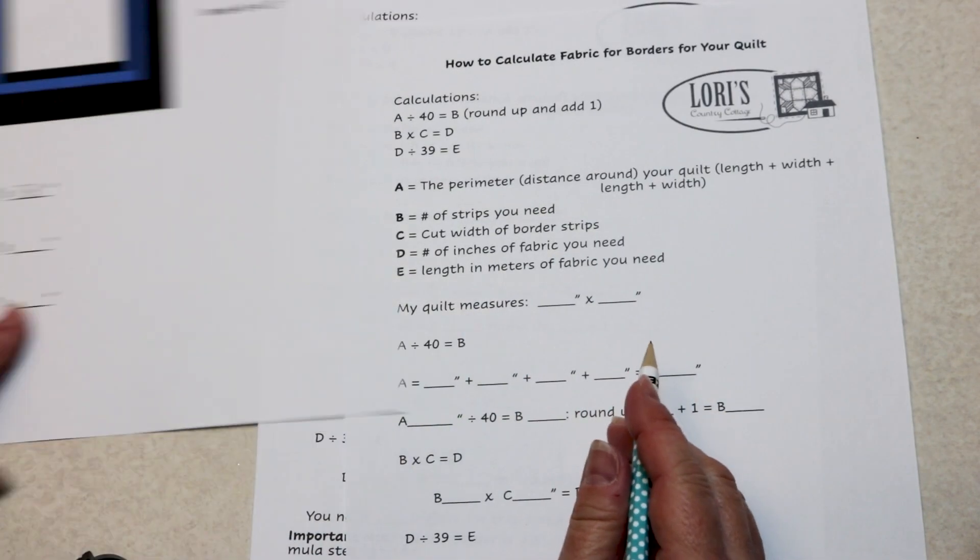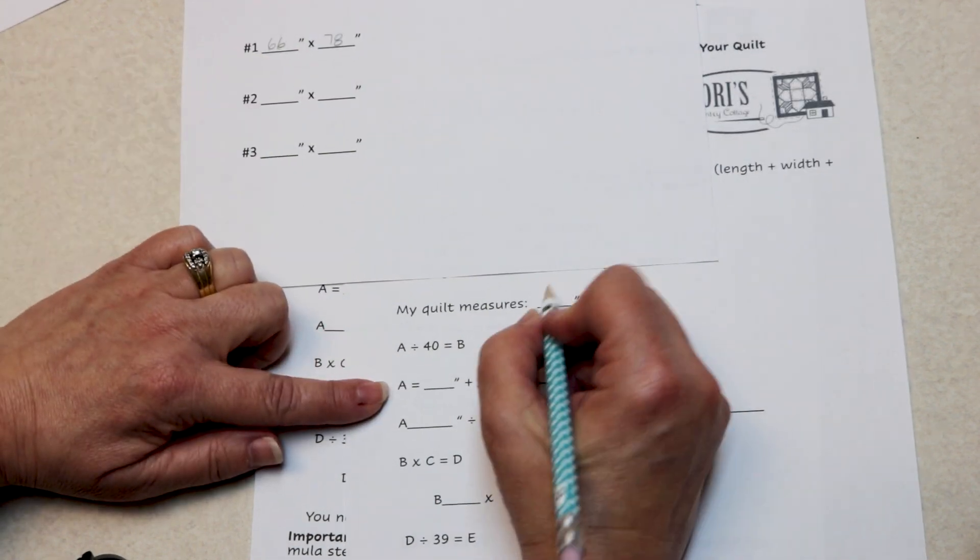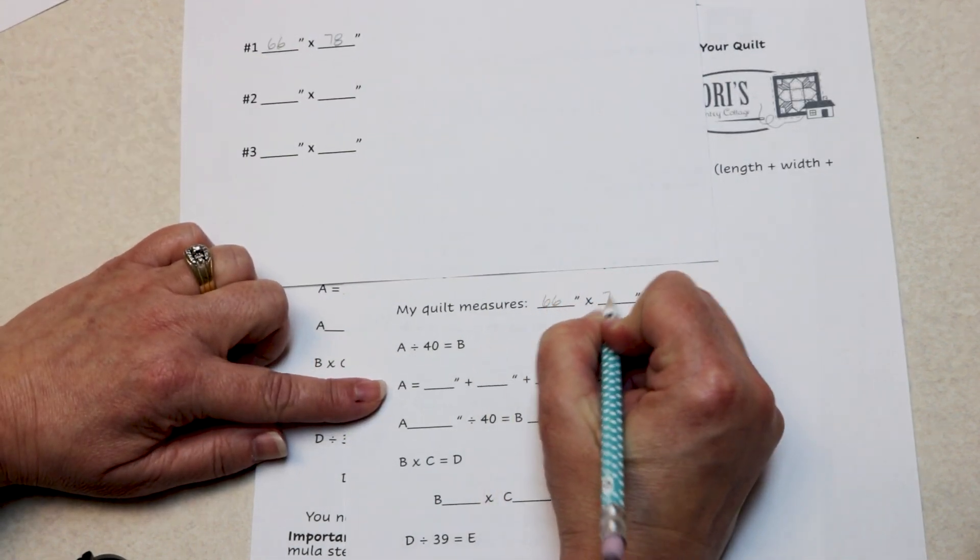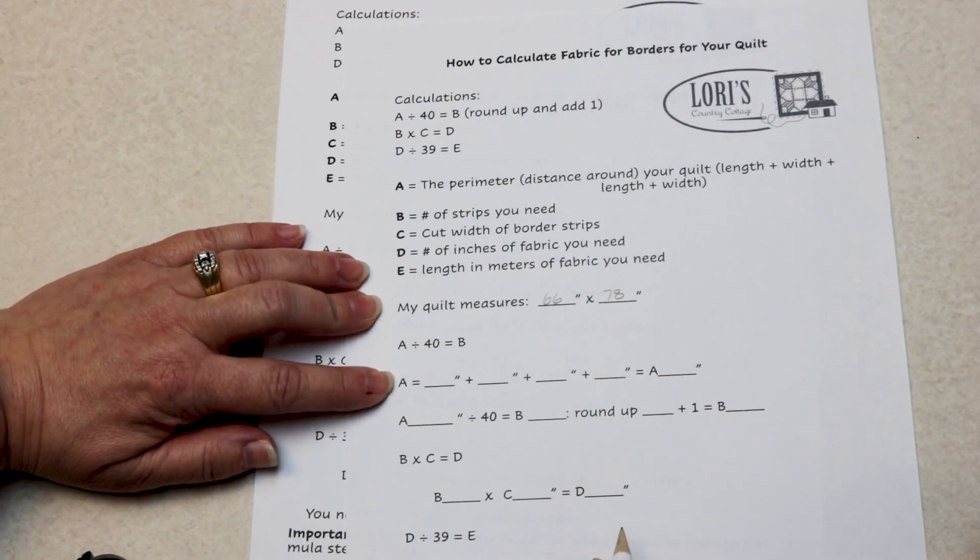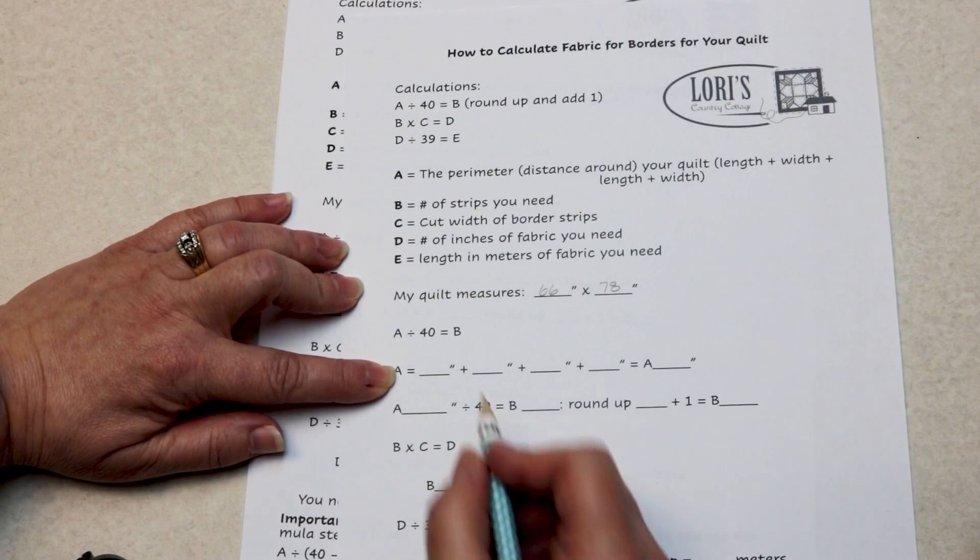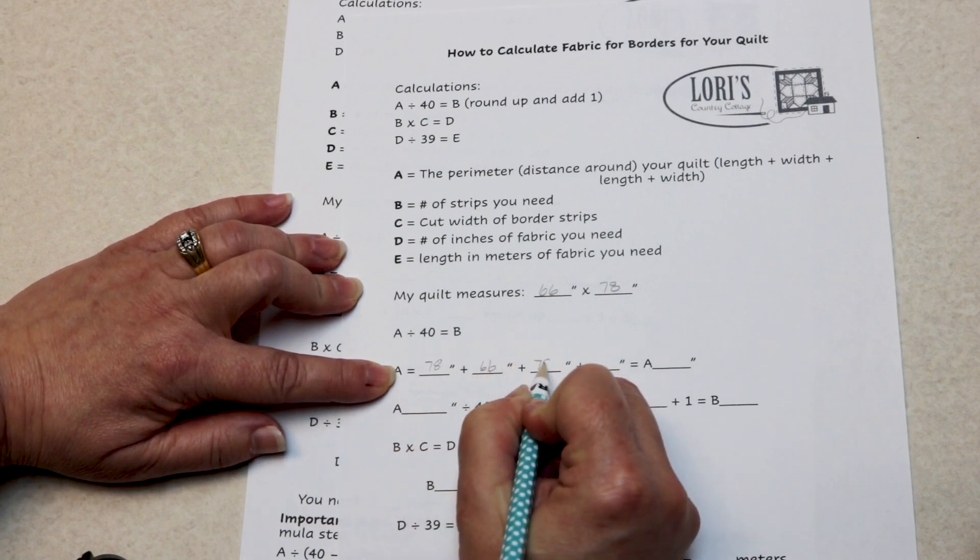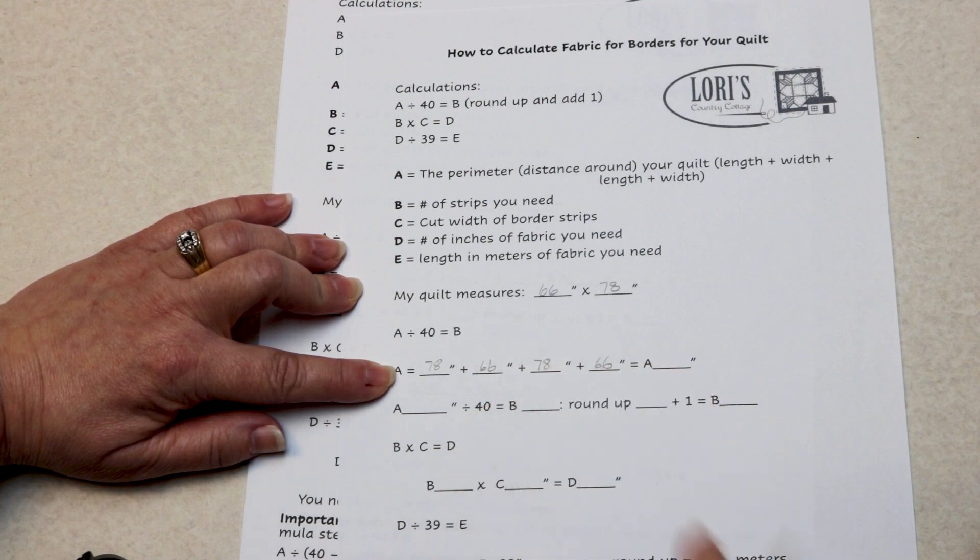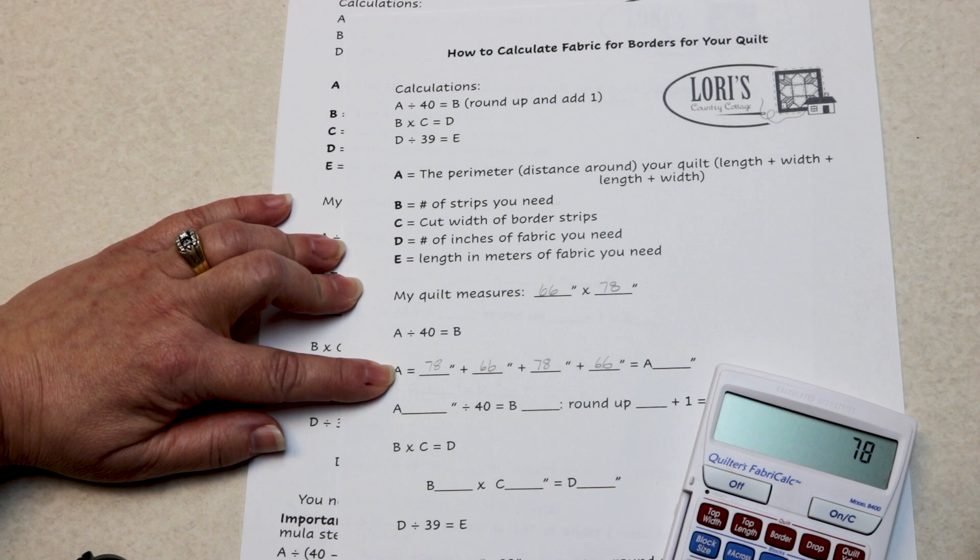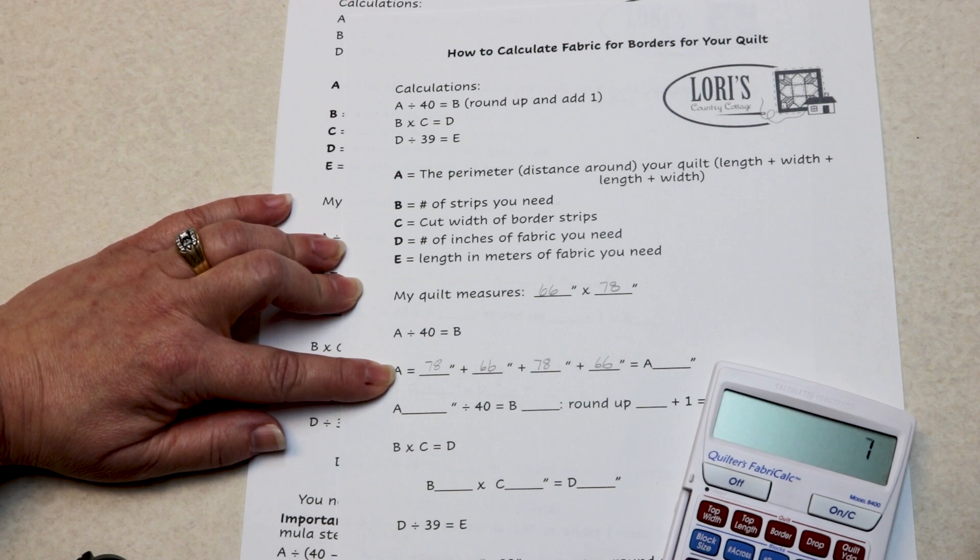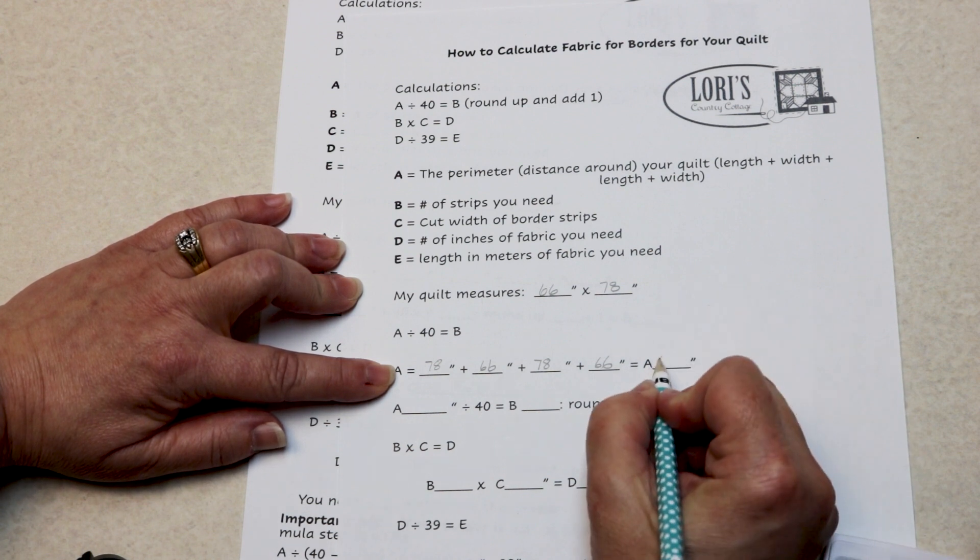Here's our next calculation. My quilt measures 66 by 78. The perimeter around my quilt is 78 plus 66 plus 78 plus 66. Let's pull out the calculator. 78 plus 66 is 288 inches.